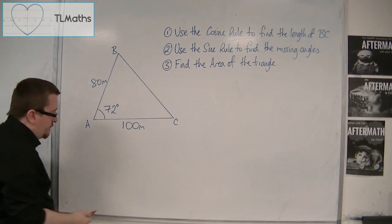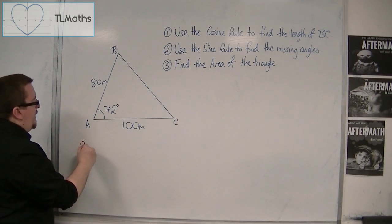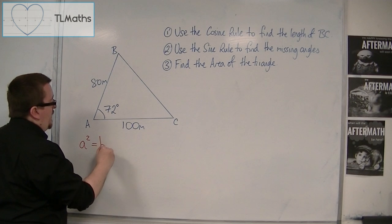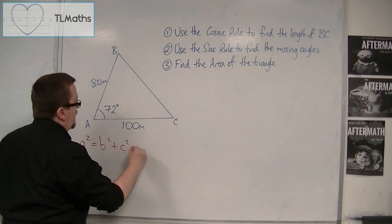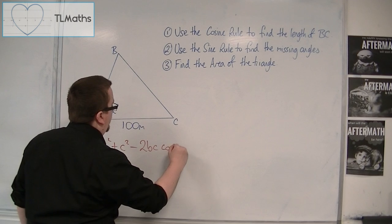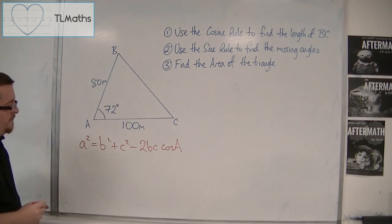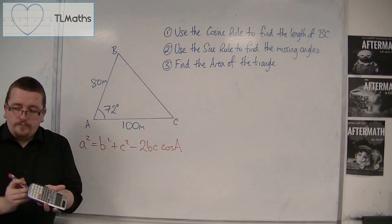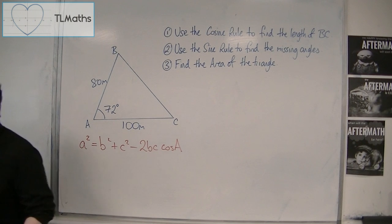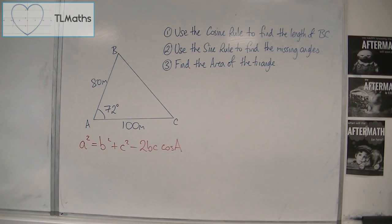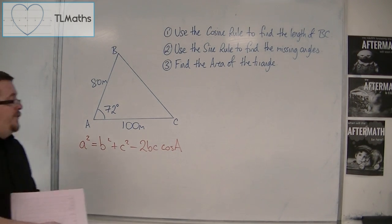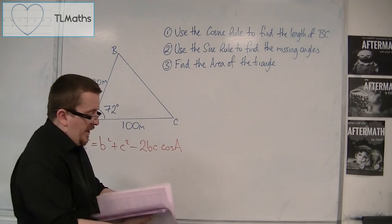Now, the cosine rule is given by a squared is equal to b squared plus c squared minus 2bc cos a.